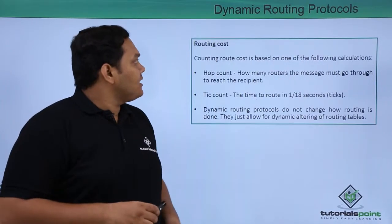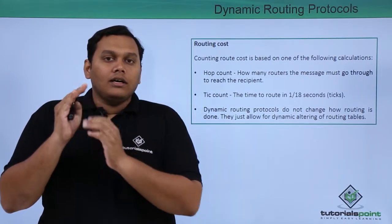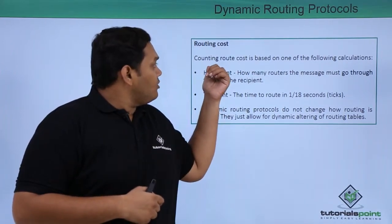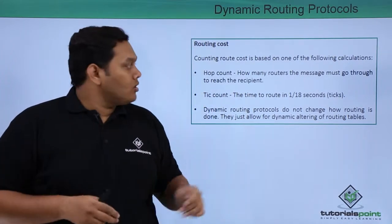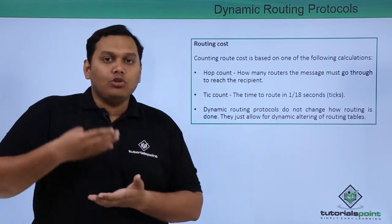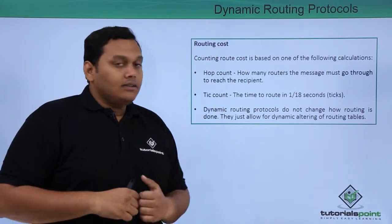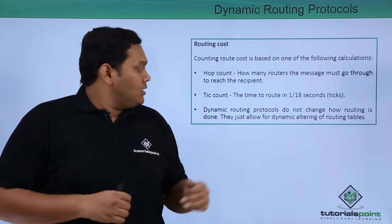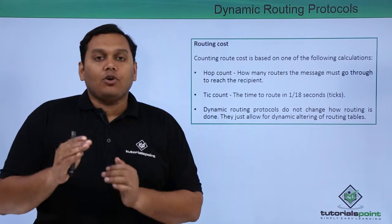The routing cost is also a main path to consider, and here is how it is calculated. The configured route cost is based on one of the following: hop count — meaning how many routers the message must go through to travel to the destination — and tick count, which is the time to route measured in 1/18th seconds, called ticks.